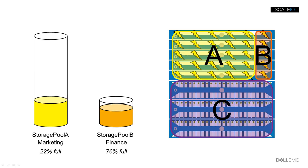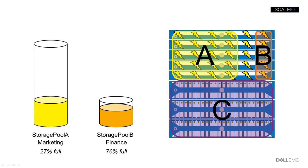With the system under load, we will move flash capacity from the marketing storage pool A to the finance storage pool B. First, we will remove five SSDs from storage pool A. The storage pool will then rebalance, migrating user data and data protection off the drives to be removed. The capacity of storage pool A will decrease, going from 22% full to 27% full. Once the SSDs have been evacuated, we will add them to storage pool B, which will then rebalance, distributing data evenly. The capacity of storage pool B will increase from 76% full to 38% full.